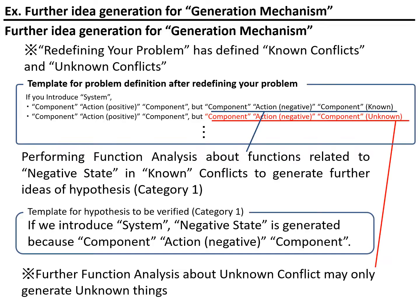I'm going to talk about an example of further idea generation for the generation mechanism. I'll explain how you may perform further idea generation. So far, you have completed redefining your program as a combination of non-conflicts and unknown conflicts. What I'm saying is that you may generate some of the ideas or hypotheses which belong to Category 1 by further performing function analysis on the functions related to negative states recognized as non-conflicts.